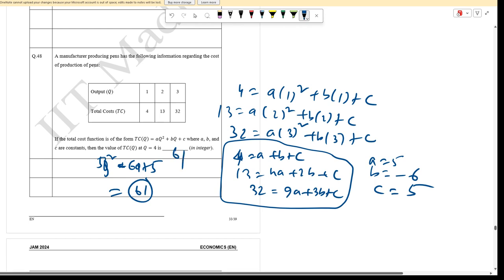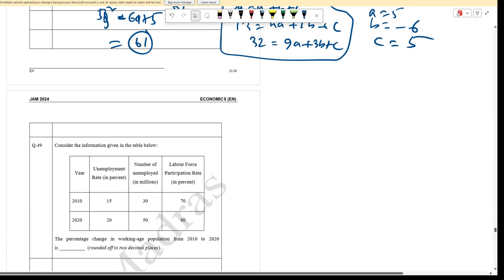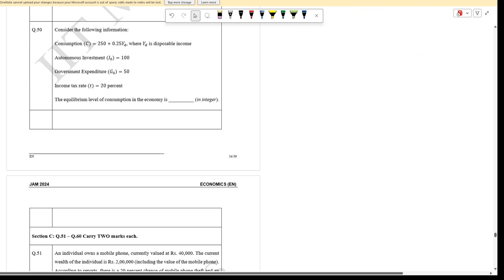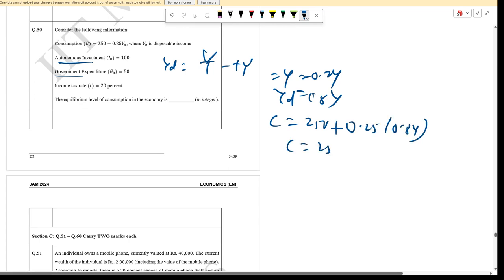Question 50: Given consumption function, autonomous investment, and other values. To find the equilibrium level of consumption, C equals 250 plus 0.5 times Y_d, I equals 100. Disposable income Y_d equals Y minus tY, which is Y minus 0.2Y equals 0.8Y. Now substitute Y_d into the consumption function: C equals 250 plus 0.5 times 0.8Y.